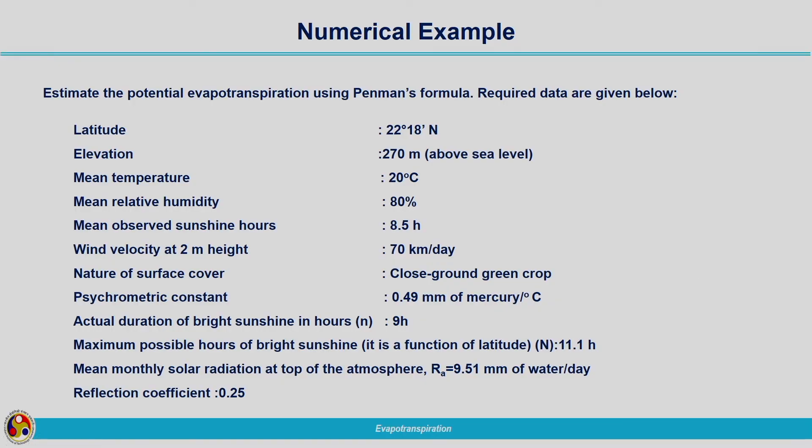First, estimate the potential evapotranspiration using Penman's formula — required data are given below. Penman's equation is actually a very simple equation, but one particular term corresponding to net radiation: if net radiation is given to you, you can easily substitute it in Penman's equation and calculate the evapotranspiration. But if the Rn value is not given, you have to use the lengthy equation provided by Penman's method for calculating net radiation.